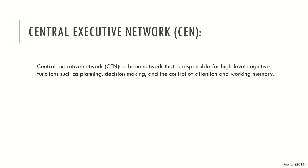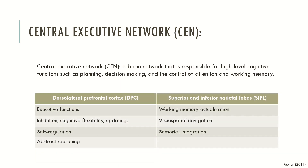One network, which comprises some of these things, is the central executive network — a brain network that is responsible for high-level cognitive functions such as planning, decision-making, and the control of attention and working memory. That's why this network is called the central executive network. When we look at the dorsal prefrontal cortex, we can see that this brain structure is typically associated with executive functions such as inhibition, cognitive flexibility, or updating, and is also associated with self-regulation and abstract reasoning.